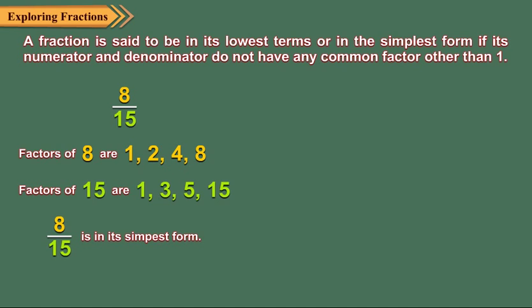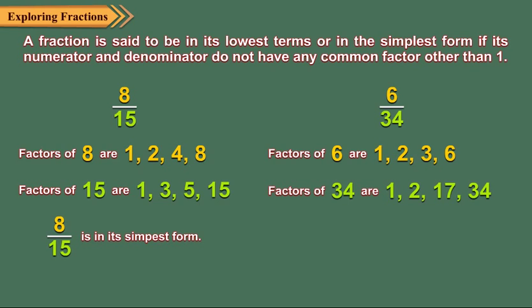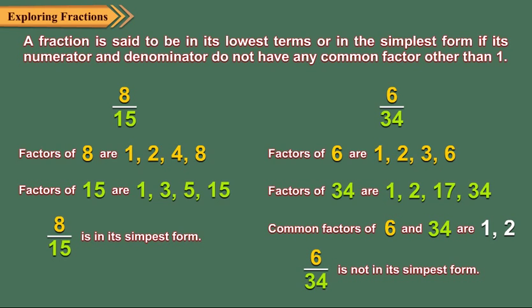Consider the fraction six upon thirty-four. All the factors of six are one, two, three and six. All the factors of thirty-four are one, two, seventeen and thirty-four. Common factors of six and thirty-four are one and two. Hence, six upon thirty-four is not in its simplest form.